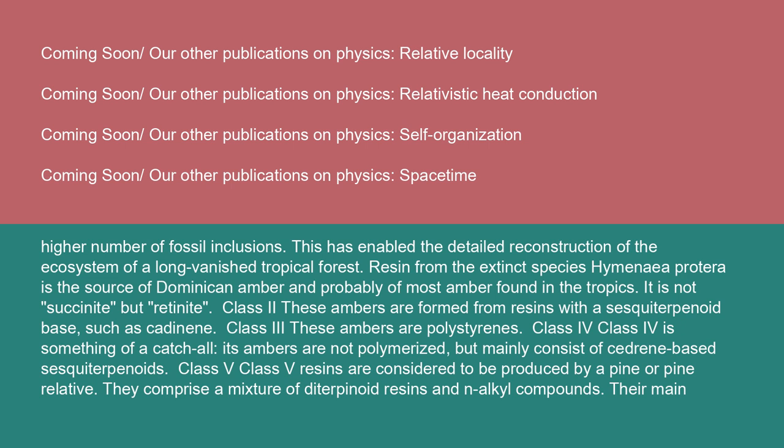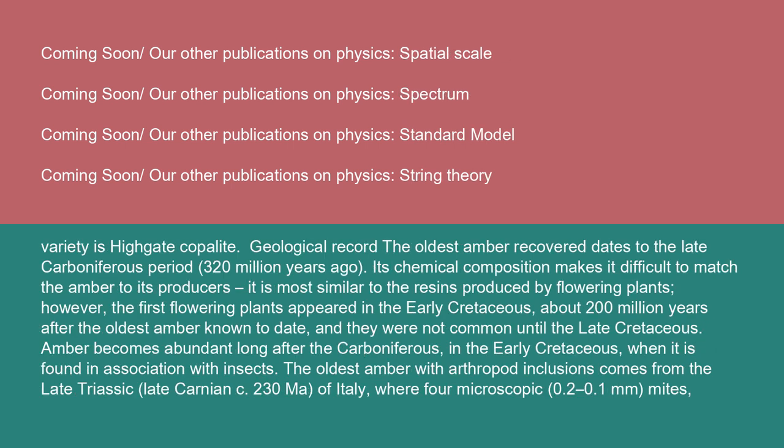Class II: These ambers are formed from resins with a sesquiterpenoid base, such as catinine. Class III: These ambers are polystyrenes. Class IV is something of a catch-all; its ambers are not polymerized but mainly consist of cedrane-based sesquiterpenoids. Class V resins are considered to be produced by a pine or pine relative. They comprise a mixture of diterpenoid resins and oleanyl compounds. Their main variety is Highgate copalite.